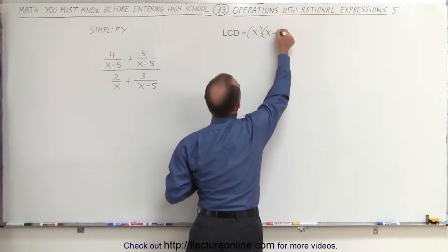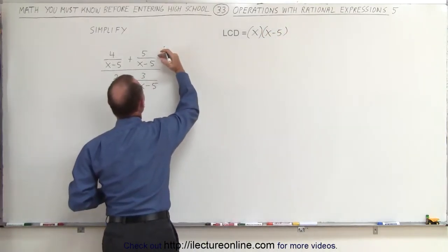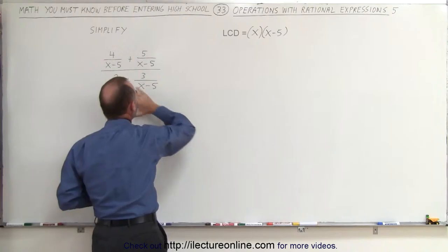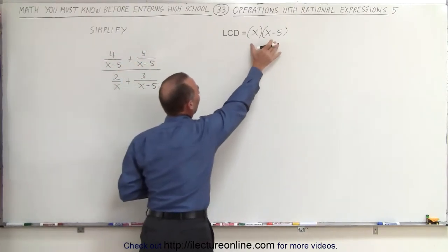What we're going to do now is we're going to multiply both the numerator and the denominator of this complicated rational expression by this factor.